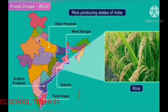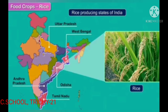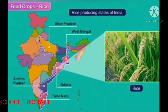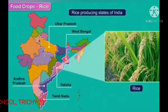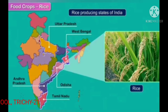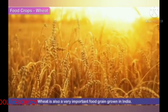Rice producing states of India are Uttar Pradesh, West Bengal, Odisha, Tamil Nadu, and Andhra Pradesh.